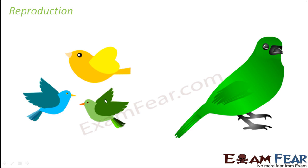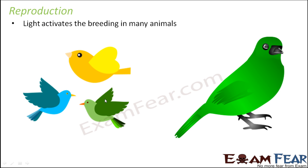Even reproduction in many animals is influenced by light. In many animals, light activates the breeding season. For example, especially in birds, they are more active for reproduction during summer than winter because light activates their breeding activities. Therefore, the reproduction process happens more frequently during summer than winters.